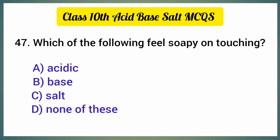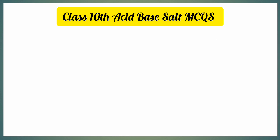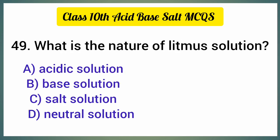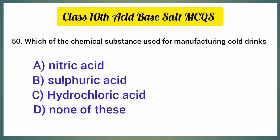Which of the following feels soapy on touching? The correct option is option B, base. The correct way of making a solution of acid in water is to — the correct option is option B, add acid to water. What is the nature of litmus solution? The correct option is option D, neutral solution. Which chemical substance is used for manufacturing cold drinks? The correct option is option D, none of these.